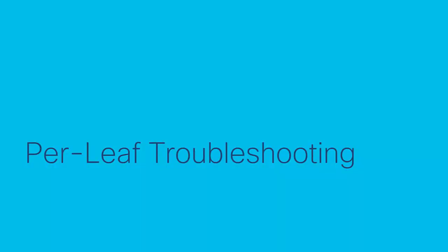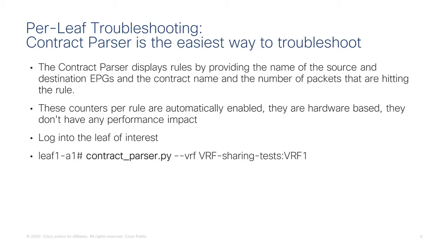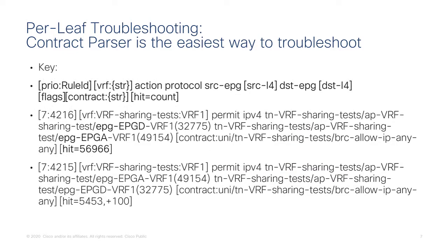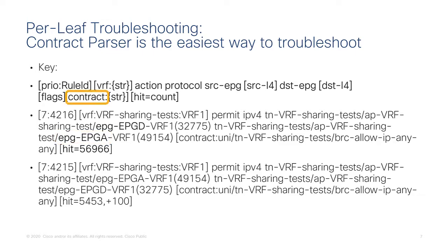The command that makes per-leaf troubleshooting easier is the contract parser Python script — contract_parser.py — which provides options for narrowing down the scope. For instance, you can specify --vrf and the VRF name, and it will tell you the rule ID number. It also provides the name of the EPG, so you don't have to do the mapping of the class ID by hand. You can see the EPG name in the contract as well as the exact hardware hit count for that rule. It's a very convenient command to use.